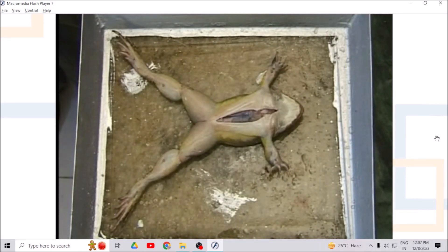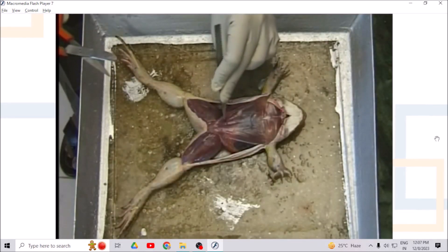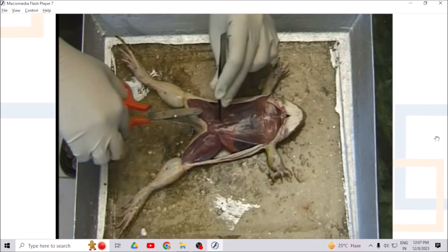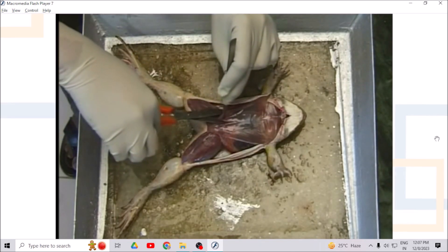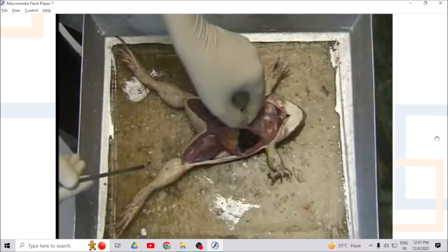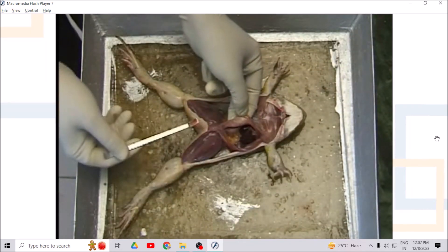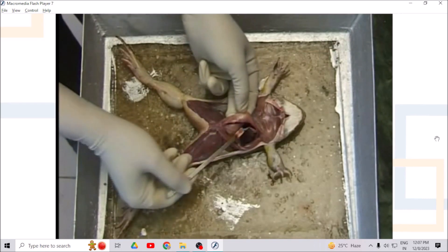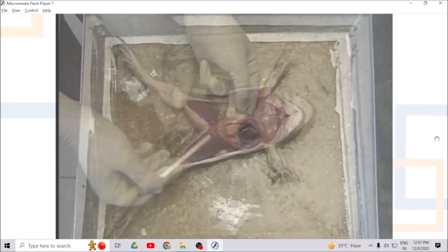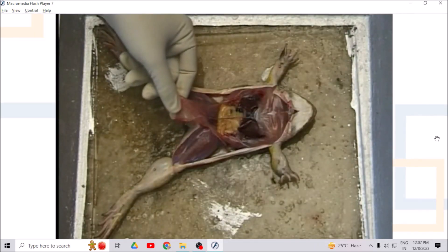Cut on each side of the abdominal muscle up to pectoral girdle. With the help of finger, separate the blood vessels to avoid loss of blood and it exposes heart. You can observe rhythmic heartbeats.